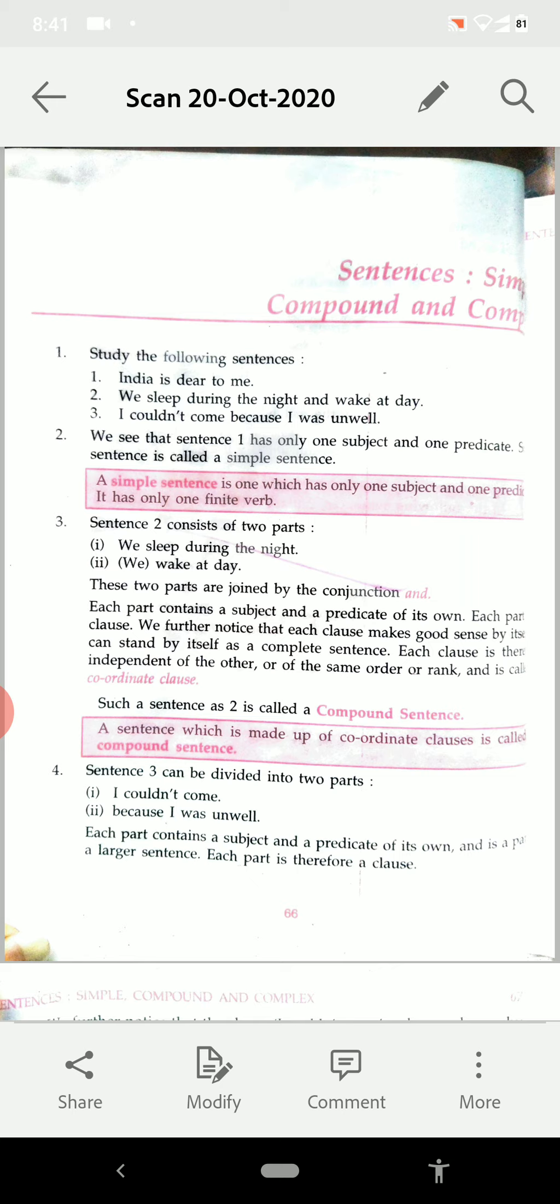Number one, India is dear to me. We see that sentence one has one subject and one predicate. Such types of sentences are called simple sentences. A simple sentence is one which has only one subject and one predicate, and it has only one finite verb.